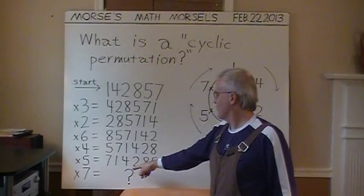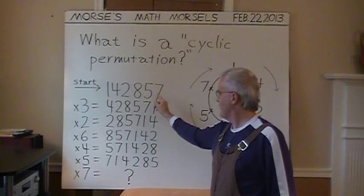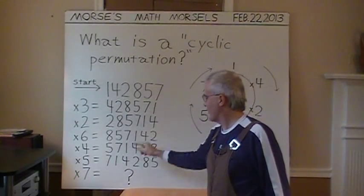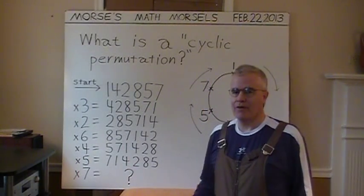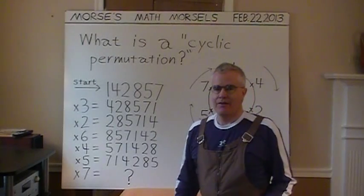The last multiplication is 142857, the original starting number, times seven. And what is that result? I leave that up to you. And thanks for viewing.